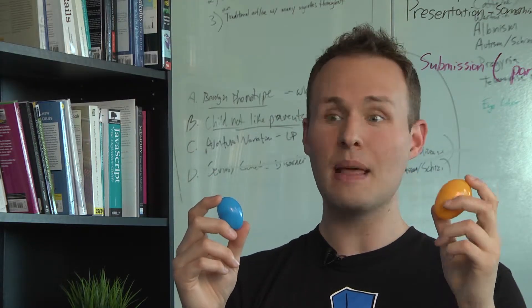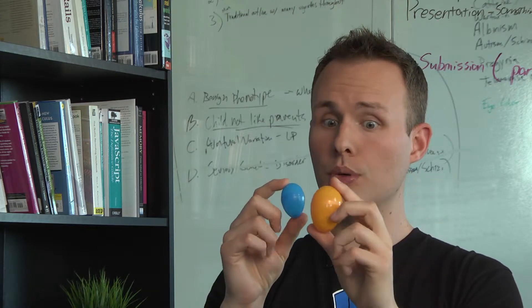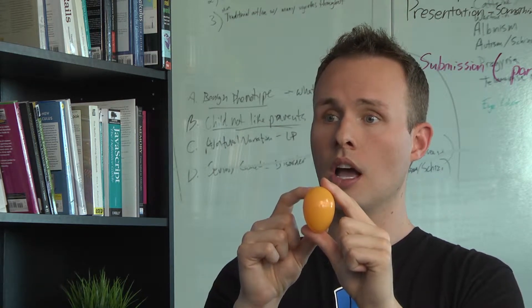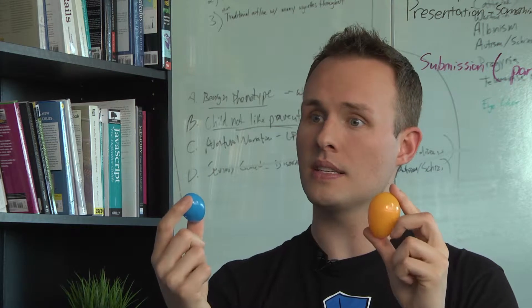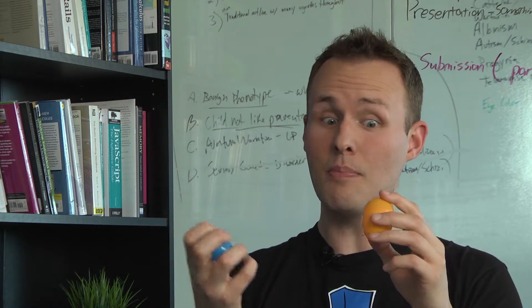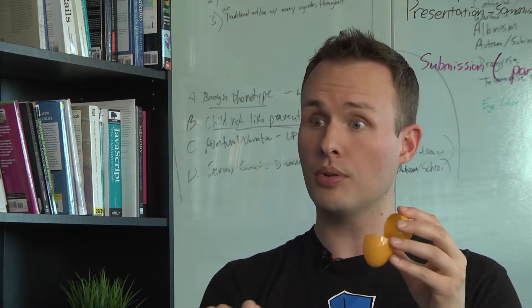What this means is that it masks the effect of the blue allele so that you can't see it. Alternatively, the blue allele is referred to as recessive because its effect is masked when there is a dominant allele present.